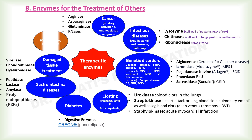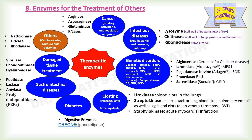A few other enzymes are used for the treatment of cardiovascular disease, gout, and cyanide poisoning. Nattokinase is an enzyme that comes from a Japanese fermented food called natto; it is considered a safe, powerful, low-cost, and all-natural supplement for the treatment of heart and cardiovascular disease. Uricase is an enzyme that degrades uric acid and can be used to treat diseases such as gout, hyperuricemia, and osteoporosis. Rhodanese is a mitochondrial enzyme that detoxifies cyanide by converting it to thiocyanate.